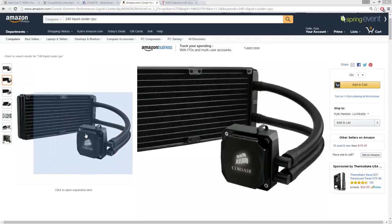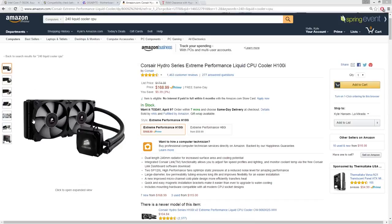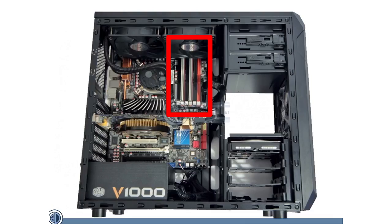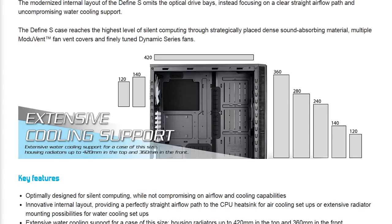All-in-one liquid coolers can pose similar clearance problems with their radiators or radiator fans. This is particularly a concern if you plan on mounting your radiator at the top of your case, where it could potentially hang down too low and clash with your DIMMs. A low-profile memory kit can do wonders here, but equally effective is choosing a case that features either a top radiator mount with ample spacing away from your motherboard, or radiator support on different sides of the chassis.